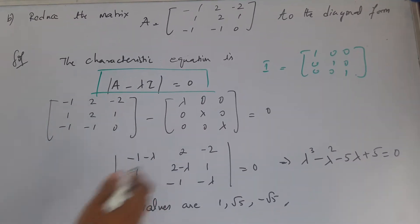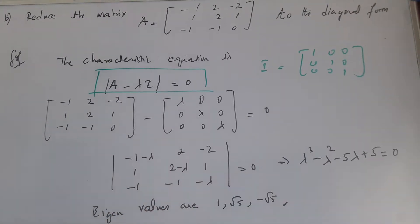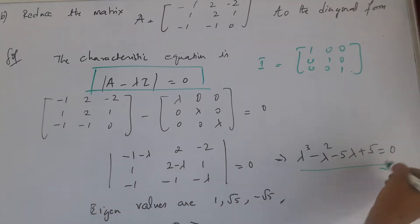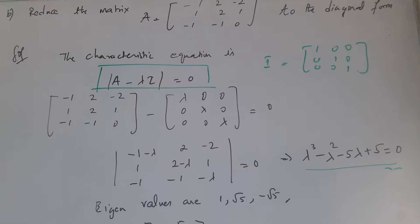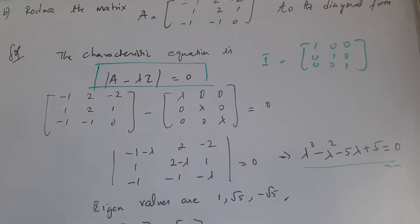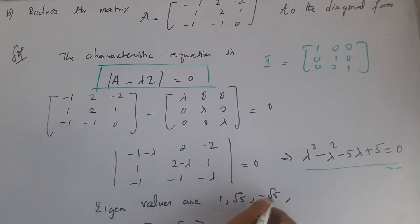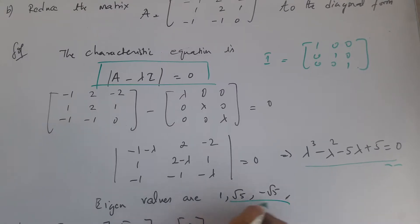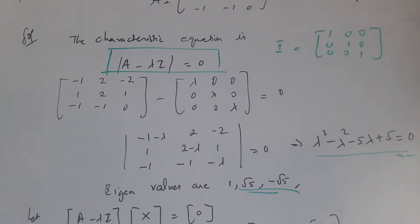After subtracting, I get this result and after finding the determinant, I get a cubic form. I will get 3 values which is 1, root 5, and minus root 5. These are the eigenvalues.